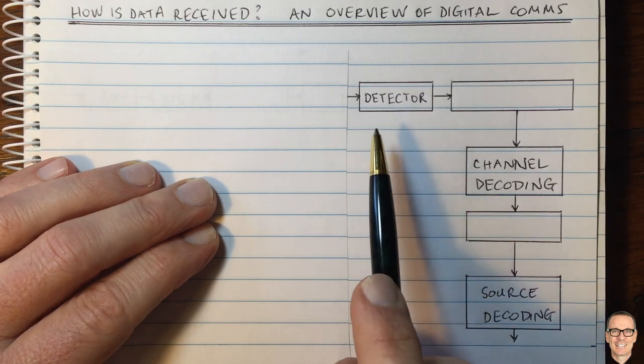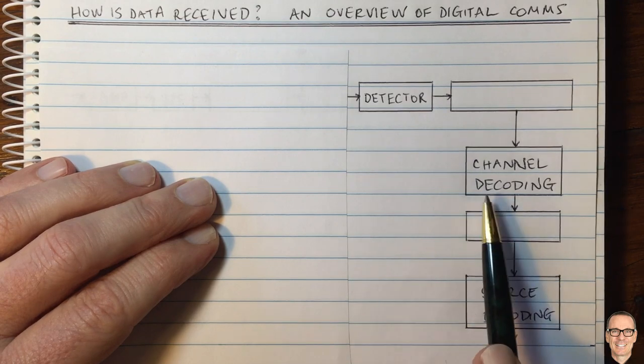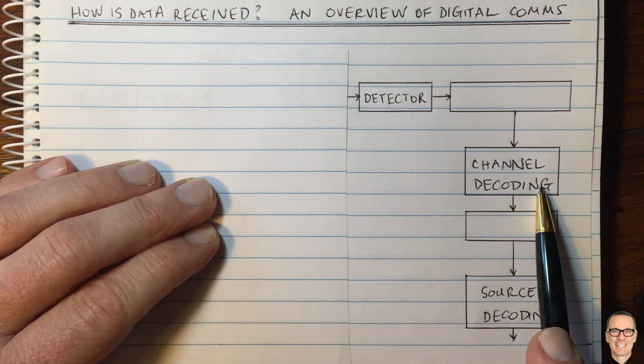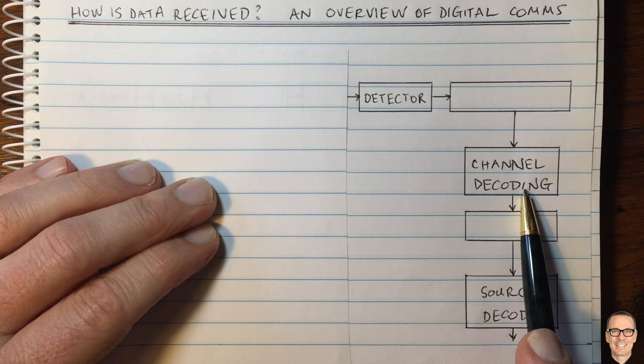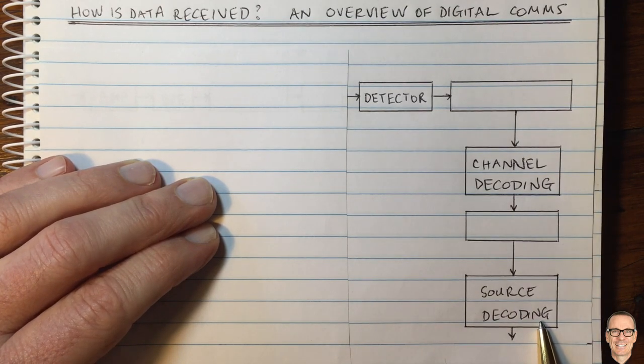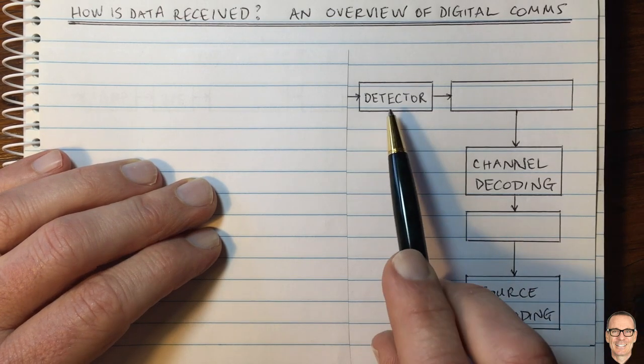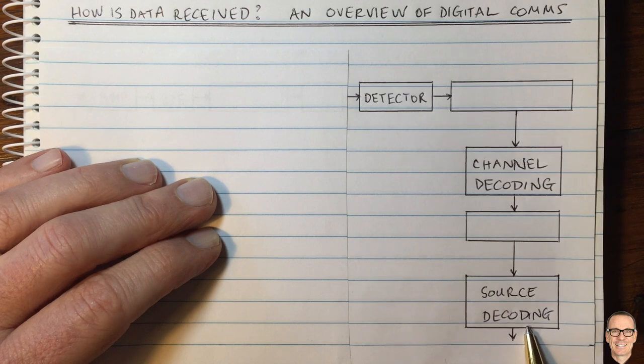What we have to do in the receiver is detect digital signals. We have to do channel decoding to overcome any errors from the channel, and we need to do source decoding to receive our original uncompressed signal. These processes mirror the processes done at the transmitter mentioned in that other video.